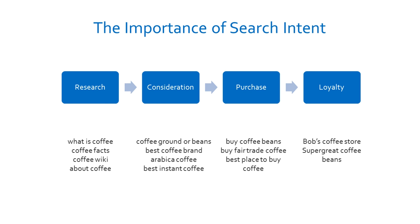The second stage is consideration, where the user knows a little bit about the product and they're starting to think about buying, but they're not quite ready to buy. They want to do some research around that product, and the research they're doing is a little bit more specific. So it might be things like 'coffee ground or beans' — meaning should I buy ground coffee beans or whole coffee beans? They might search 'best coffee brand' to find the best value for money or best tasting coffee brand, and so on.